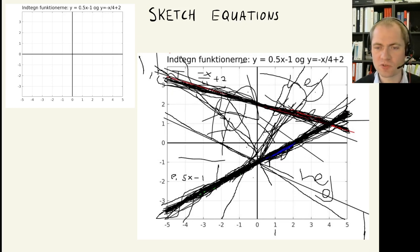A different task was simply to provide the equation of two different lines. In this case, y equals 0.5 times x minus 1, and y equals minus x divided by 4 plus 2. And then see, are the students able to actually draw these two lines in the same coordinate system? And most of the students were.